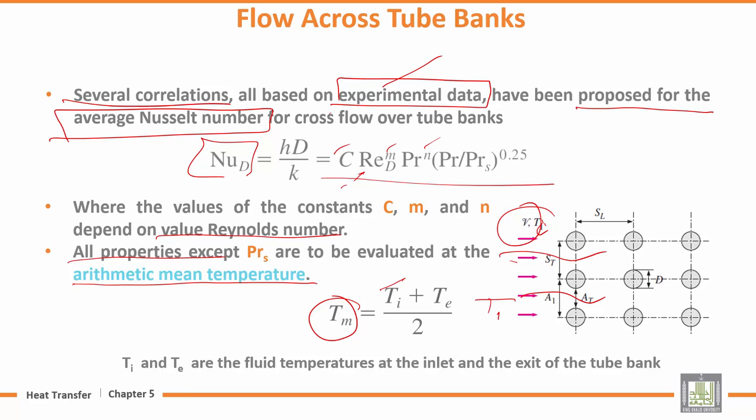Here on the tube banks, T_in at the inlet, T_e at the exit. Here we can take the average, the Pr_s, the Prandtl. Here we can take the T_s, the tubes.